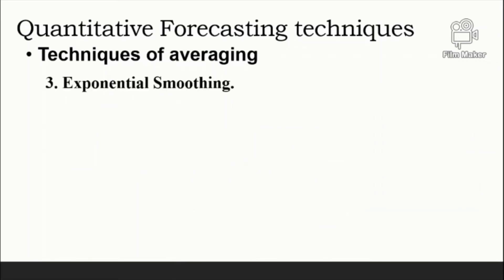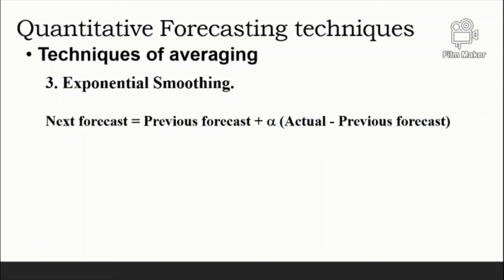The third technique of averaging is exponential smoothing. Exponential smoothing is a sophisticated weighted averaging method that is still relatively easy to use and understand. Each new forecast is based on the previous forecast plus a percentage of the difference between that forecast and the actual value. That is: next forecast equals previous forecast plus alpha multiplied by (actual demand minus previous forecast), where the difference represents the forecast error.